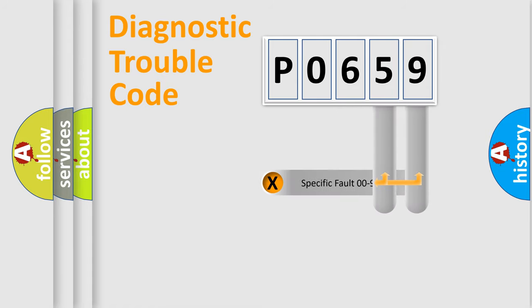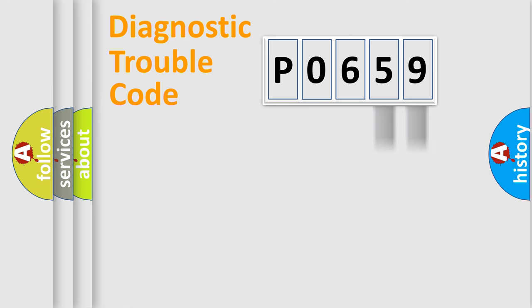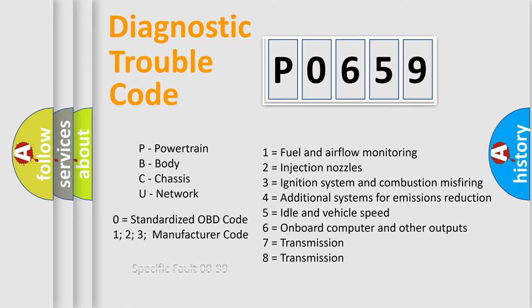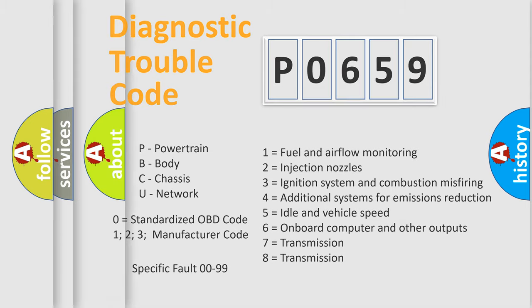Only the last two characters define the specific fault of the group. Let's not forget that such a division is valid only if the second character code is expressed by the number zero.